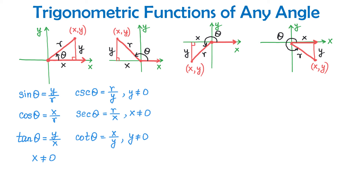So we had angle theta in quadrant 1, quadrant 2, quadrant 3, and quadrant 4. These definitions also work when theta is on the x-axis, on the y-axis, or when theta is negative. We just have to ensure that for cosecant y cannot be 0, for secant x cannot be 0, for cotangent y cannot be 0, and for tangent x cannot be 0.